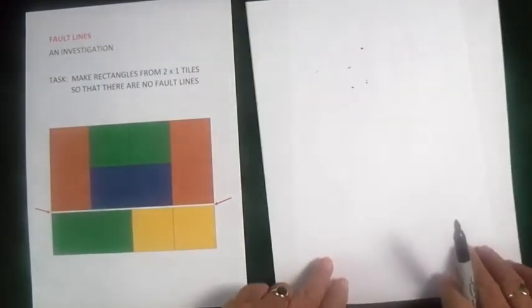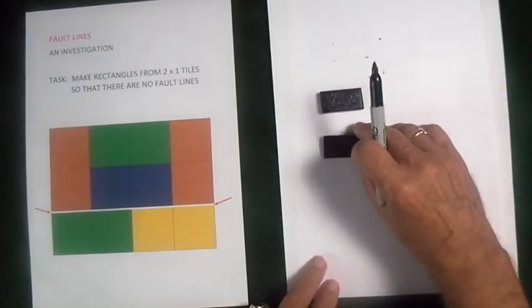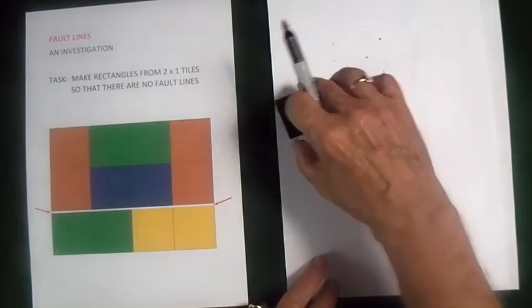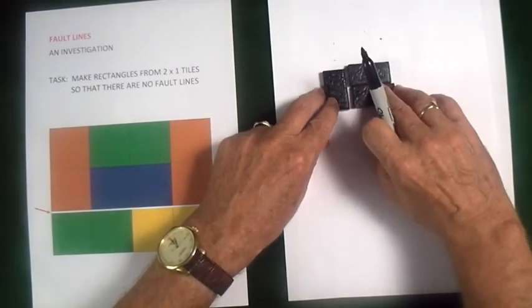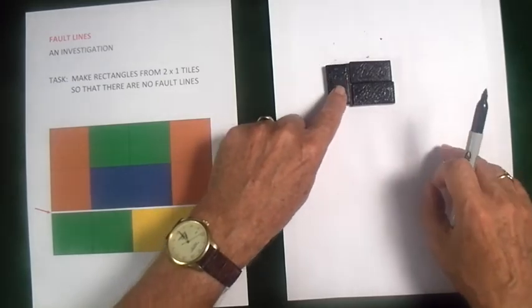I'm going to choose to do this using dominoes. You can either use paper to draw on, you can use dominoes. Here are my dominoes. And that was the one I just did. It's not quite the same, but it's got a fault line in it.